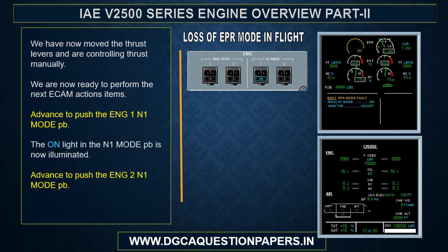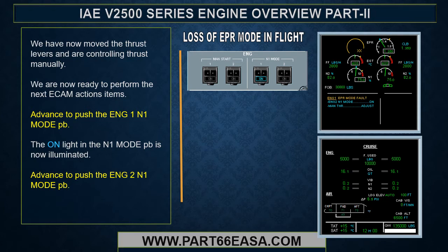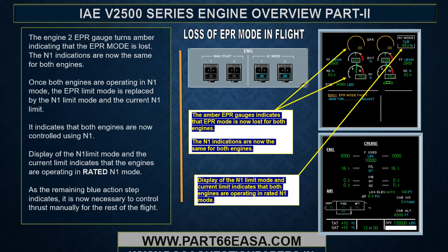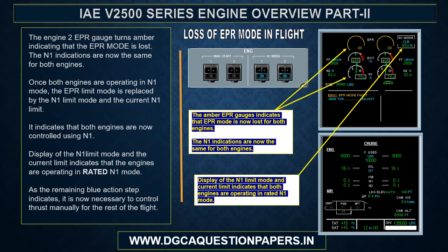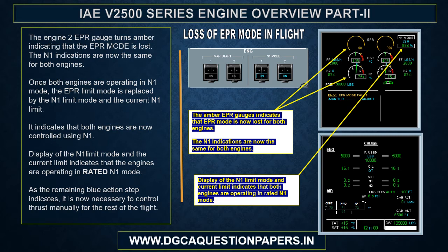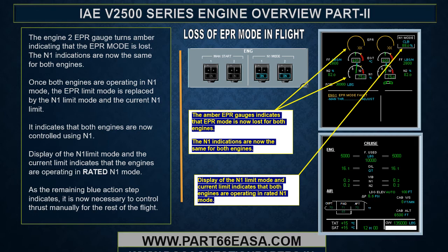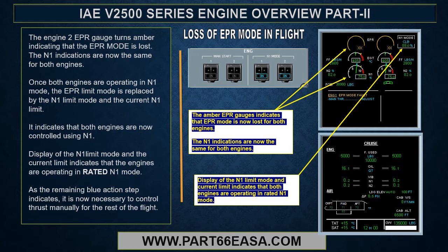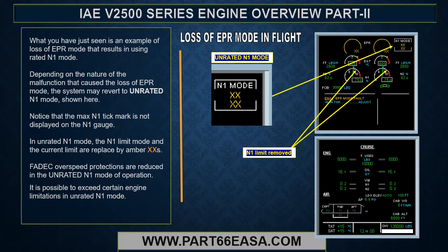Push the engine 1 N1 mode push button — the ON light is now illuminated. Then push the engine 2 N1 mode push button. The engine 2 EPR gauge turns amber, indicating that EPR mode is lost, and the N1 indications are now the same for both engines. Once both engines are operating in N1 mode, the EPR limit mode is replaced by the N1 limit mode and the current N1 limit, indicating that both engines are now controlling using N1.